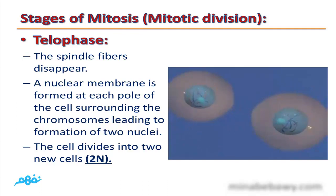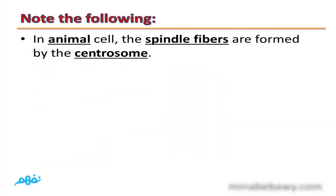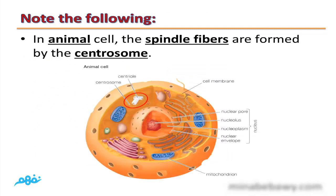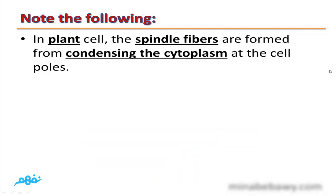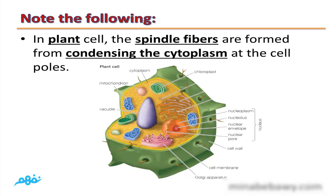So we have two cells from only one cell — these are the phases of mitosis. Note: in animal cells, the spindle fibers are formed by the centrosome, which is the part of the animal cell responsible for the formation of spindle fibers. In plant cells, the spindle fibers are formed from condensing the cytoplasm at the cell poles — this jelly-like cytoplasm is responsible for the formation of spindle fibers in plant cells.